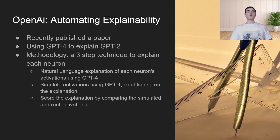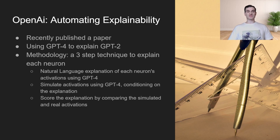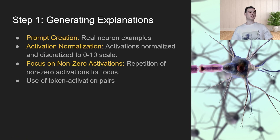Recently, OpenAI published a paper where they used GPT-4 to explain the individual activations of the neurons in GPT-2. Their methodology was a three-step process. First, they generated a natural language explanation of each neuron's activations using GPT-4. Second, after generating that natural language hypothesis, they used GPT-4 to simulate the activations of the neurons on new tokens. Finally, they compared the actual activations with the simulated activations to come up with a correlation score to see how well those simulated activations line up with the actual activations. Let's dive a little bit deeper.